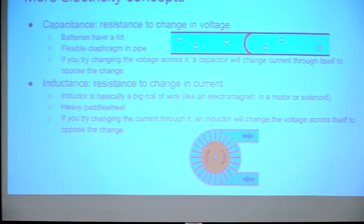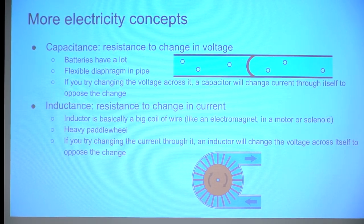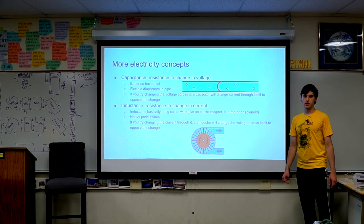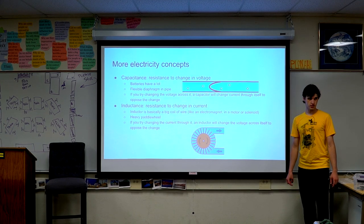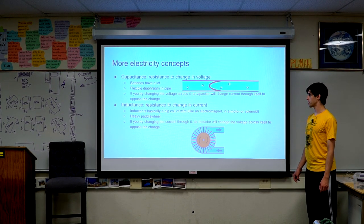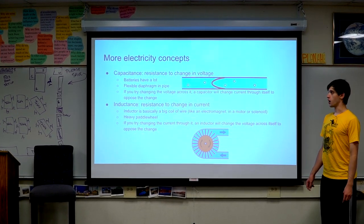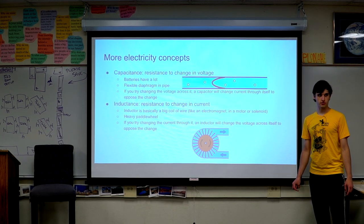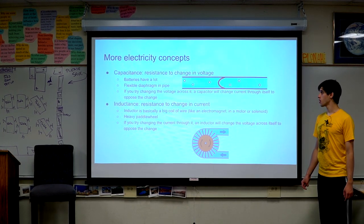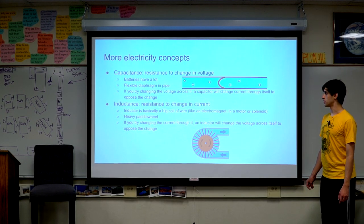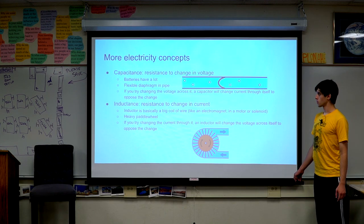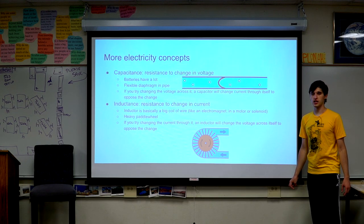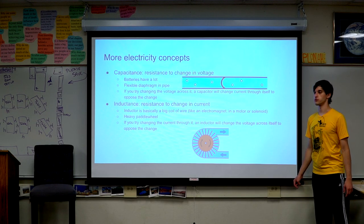For more detail we need a couple more electrical concepts. Capacitance is resistance to a change in voltage. In the water analogy it's like a flexible diaphragm in your pipe — when you push water in one side the diaphragm stretches, so you don't get as much pressure buildup as you would in a rigid pipe. Batteries are basically a really big capacitor — you can draw quite a bit of current and the voltage doesn't change much. Another way to think of a capacitor: if you try to change the voltage across it, the capacitor will force a change in current to oppose that voltage change.